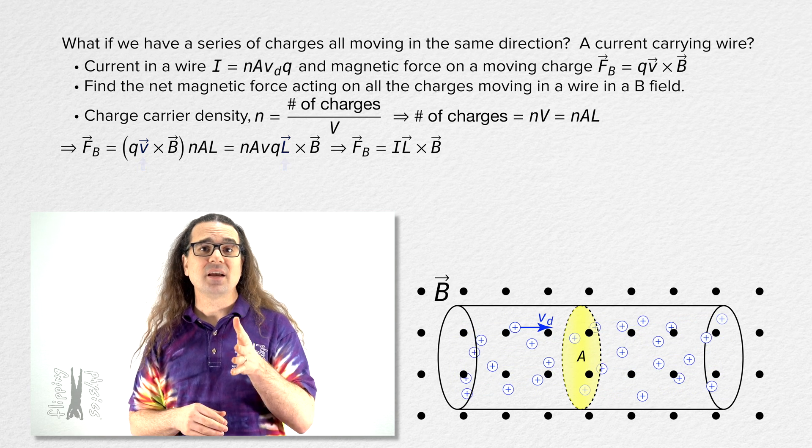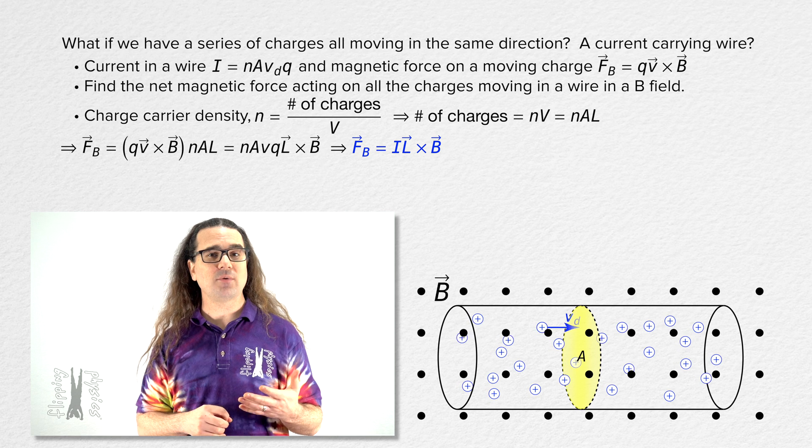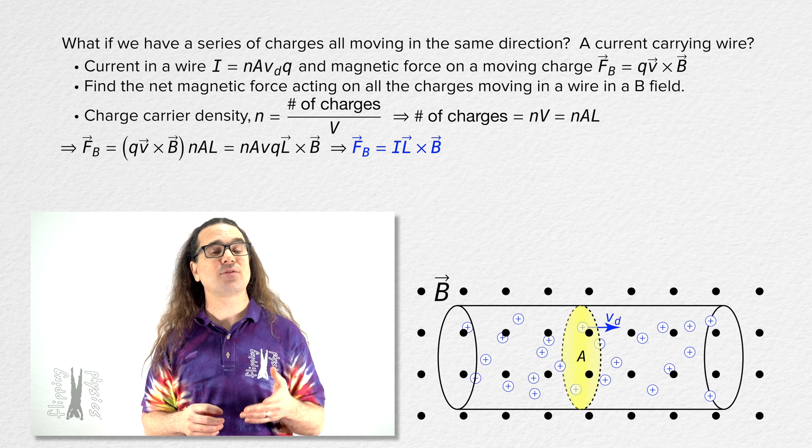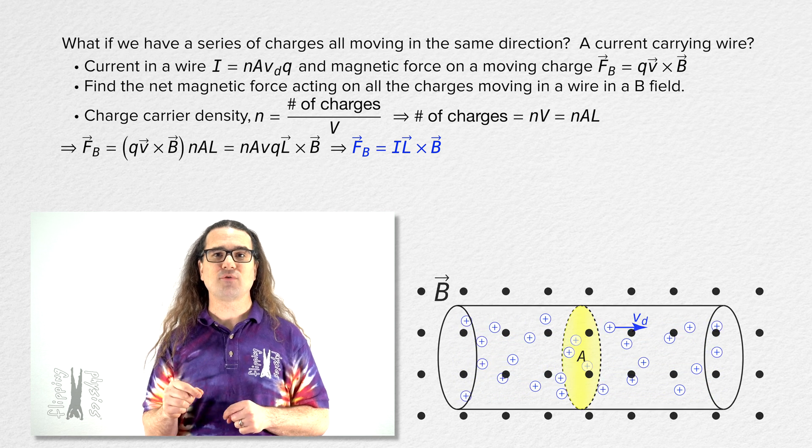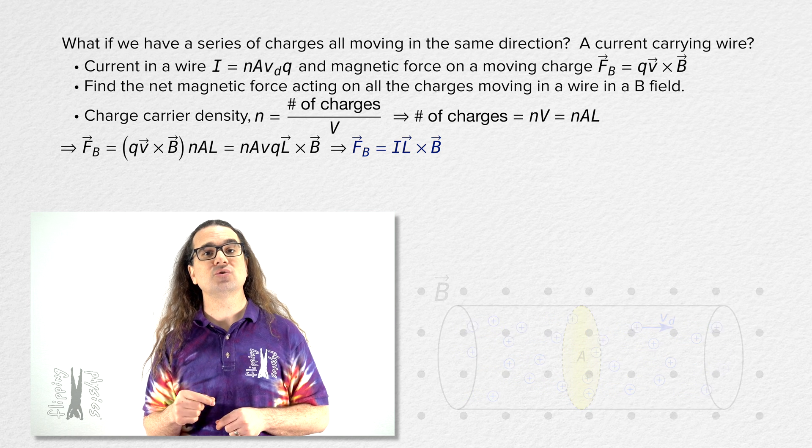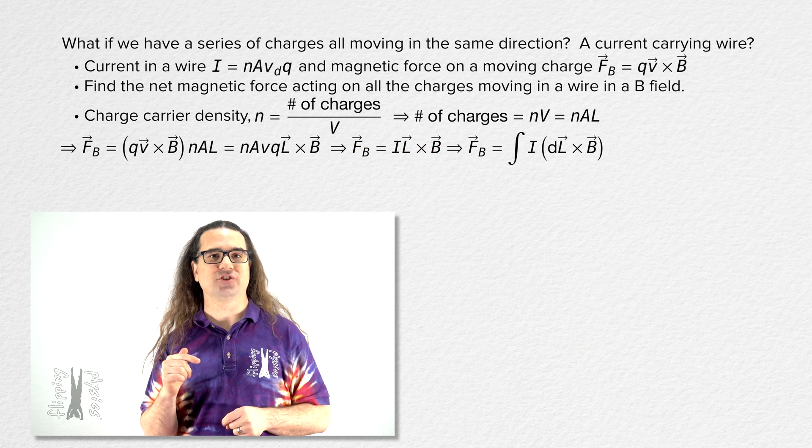Now, realize that equation is for a straight wire. And, when a wire does not follow a straight path or the magnetic field is not uniform over the wire, we need to use the integral form of that equation instead.